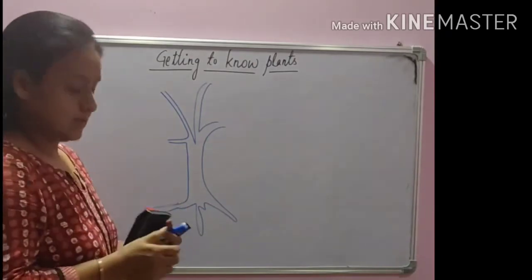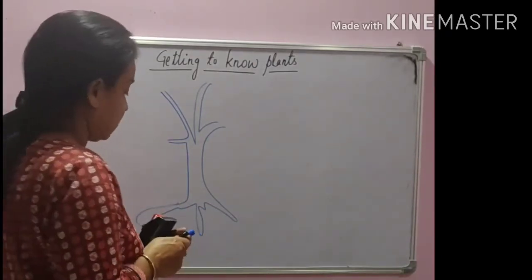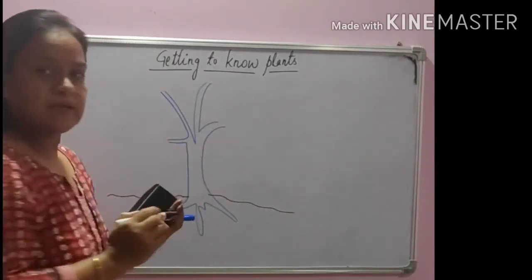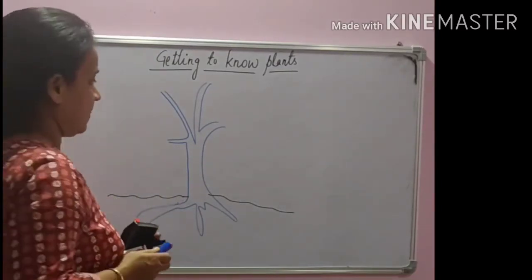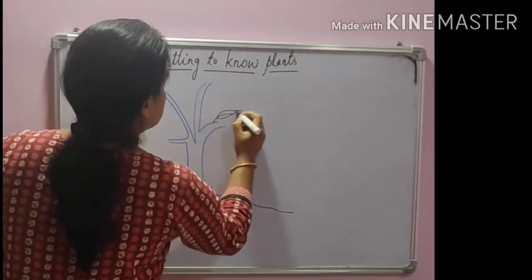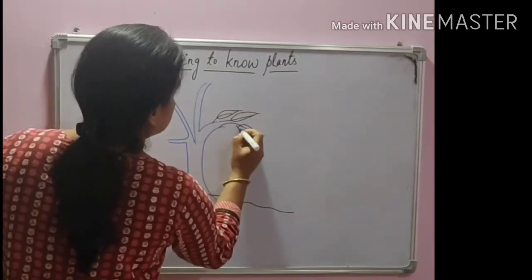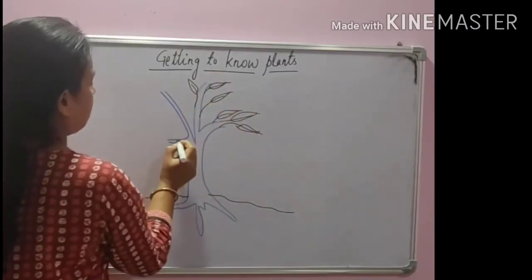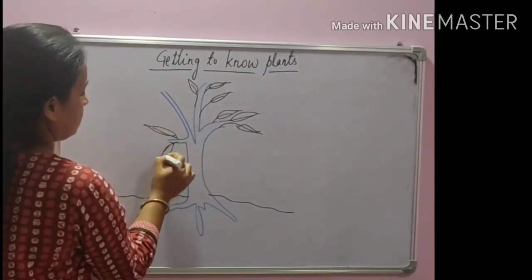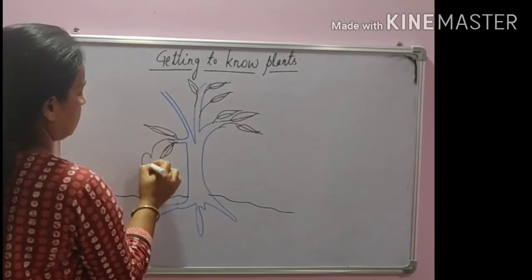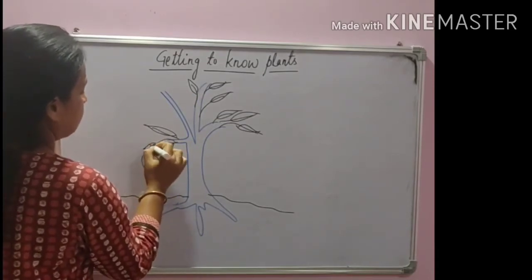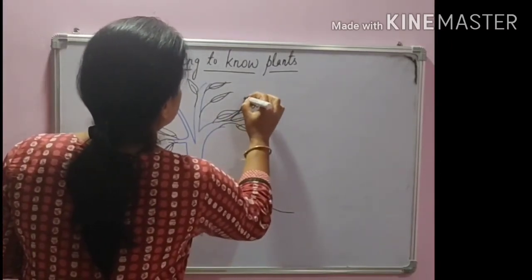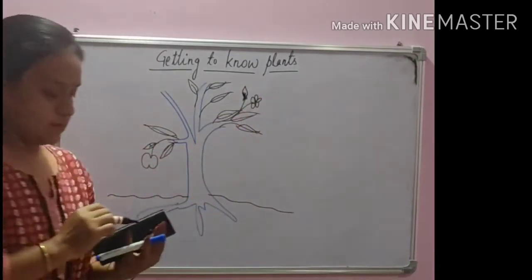Now, suppose this is a plant where you can see some parts are underground and the remaining part is above ground. If I draw some branches and leaves, suppose these are the leaves and this is a branch. There may be some flowers and some buds — there are different parts of a plant.